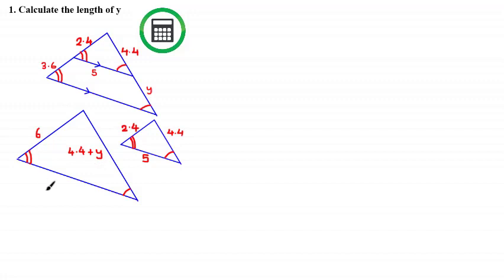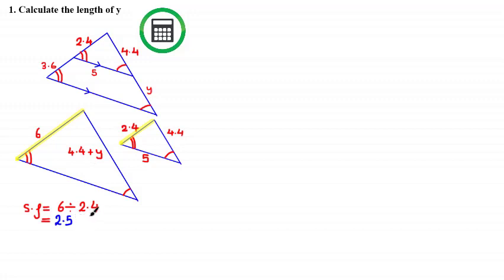By looking at these two shapes separately we can see that the corresponding angles are equal, and therefore these are indeed similar shapes. The two corresponding sides we should use to find the scale factor are these sides. So to find the scale factor of length we do 6 divided by 2.4, giving us a scale factor equal to 2.5.